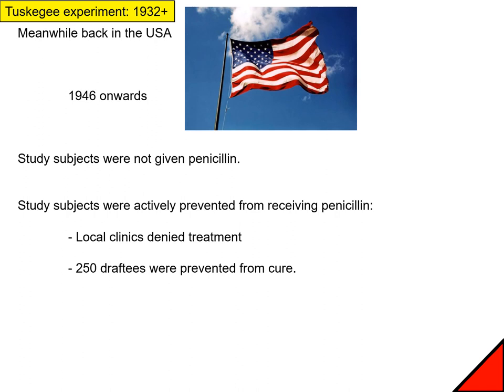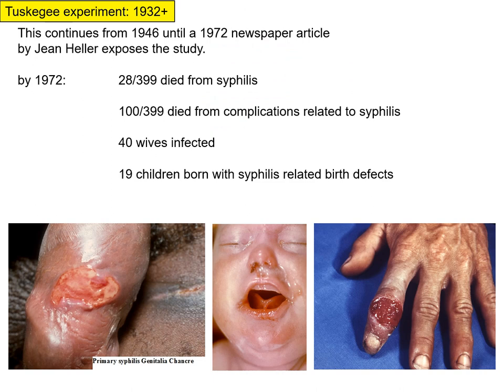Meanwhile, back in the US, as the government was experimenting on people in Guatemala, the members of the Tuskegee experiment were not given penicillin. In fact, the study subjects were actively prevented from receiving it — the people running the experiment talked to local clinics and had them deliberately deny penicillin to the people in the study. About 250 of the people in the study ended up getting drafted, and the study runners used their connections to make sure those individuals did not get the usual penicillin and vaccinations that someone entering the armed services would typically receive.